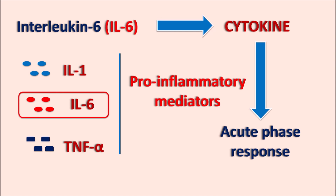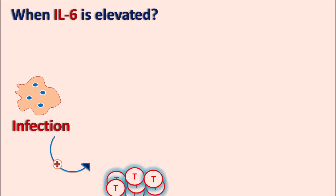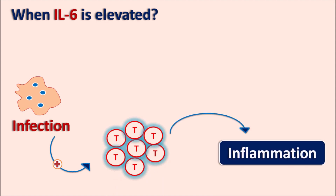Today we are going to discuss about the role of IL-6 during inflammation: in which conditions it is elevated, how it is detected, and what the normal values are. When IL-6 is elevated, the elevation of IL-6 levels is associated with the immune response. In the case of any systemic infection, it can lead to stimulation of immunity so that T cells are activated and these T cells can release mediators which produce systemic inflammation.